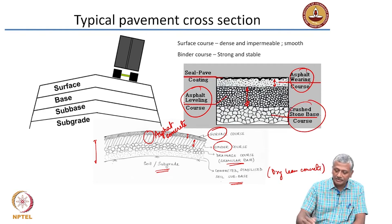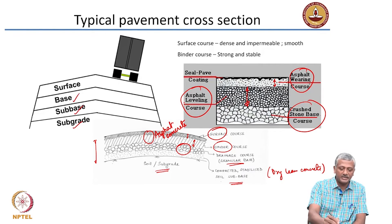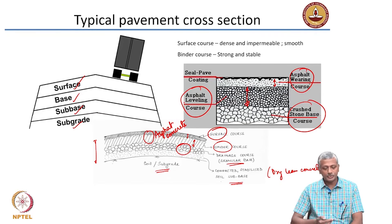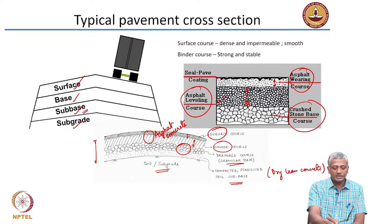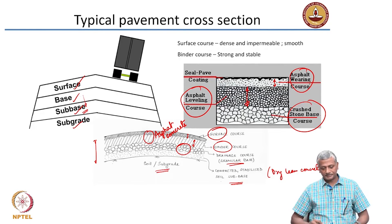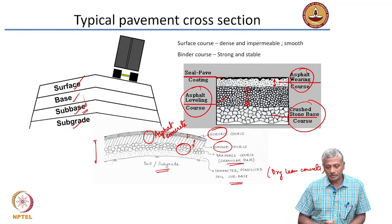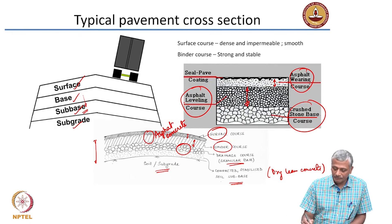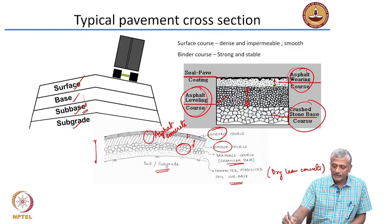The terminology can vary: you have subgrade below ground level, then subbase, then base, and then the surface. So the layer-wise distribution of a flexible pavement from bottom to top is: subgrade, subbase, granular base, binder course or asphalt leveling course, and surface course or asphalt wearing course on top.